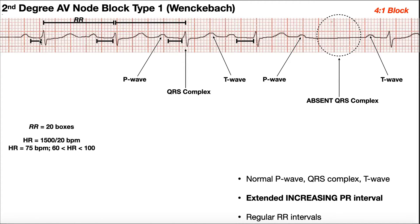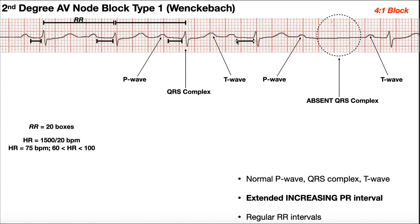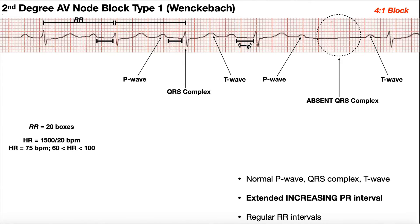Looking at this pattern, I like focusing on the horizontal line between the P wave and the QRS — it makes it easier to eyeball. This one is shorter than this one, shorter than this one, definitely shorter than this one. The PR interval is lengthening every time. As long as the last one before the QRS is dropped is longer than the first one, you can say it's an increasing PR interval and therefore type 1. The PR interval increases in size, then the QRS is dropped.